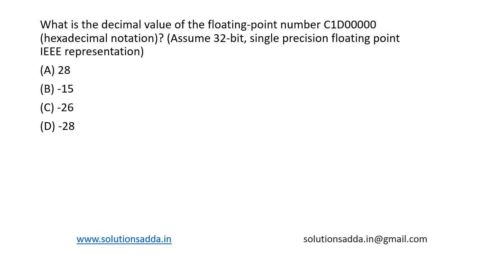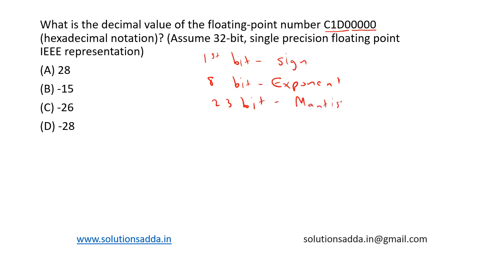This is a question from digital logic design: what is the decimal value of the floating point number C1D00000? This is hexadecimal notation; assume we are using 32-bit single precision IEEE 754 floating point representation. In this format, the first bit is the sign bit, the next 8 bits represent the exponent, and the next 23 bits represent the mantissa. It is represented in the form: minus one to the power s, into one point m (mantissa), into two to the power e minus 127.